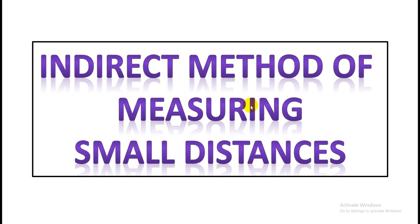Hello everyone, today we are going to discuss indirect methods of measuring small distances. We have already seen the indirect methods of measuring long distances and very long distances. Now for very small distances, such as to measure the radius of an atom, we need some indirect method because directly it is not possible.